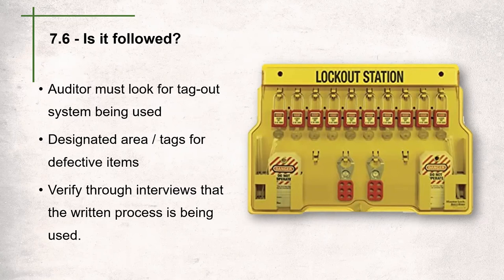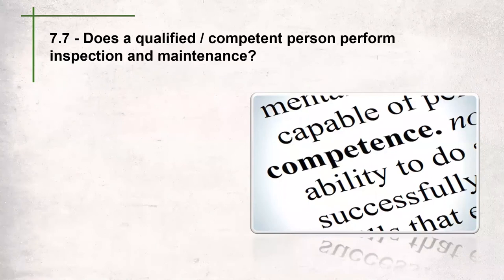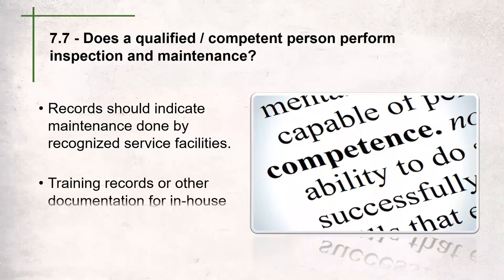Question 7.7 asks: does a qualified or competent person perform inspection and maintenance? It's important that whoever does maintenance or repairs on company equipment is authorized and competent to do so. Auditors will look through maintenance records to determine who is performing maintenance — such as a recognized service facility. Any in-house staff permitted to perform maintenance must have documentation to prove that competence. Advisory services can help in this area, especially around documenting previous experience.